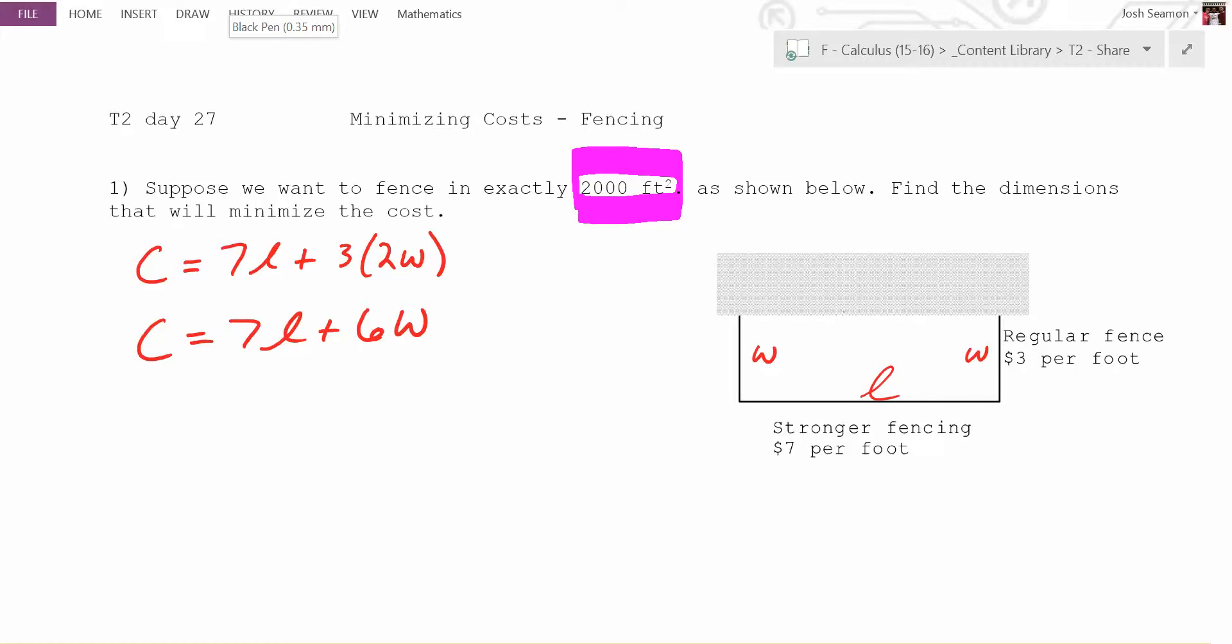That's a noun. Can you give me a relationship between L and W now? If the area is 2,000 square feet, what is the relationship? That's perimeter. How do you find the area of a rectangle? Well, length times W. Exactly. So tell me what the equation is. 2,000 equals L times W. Yes, exactly.